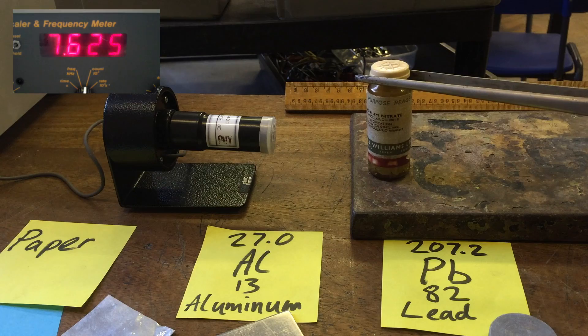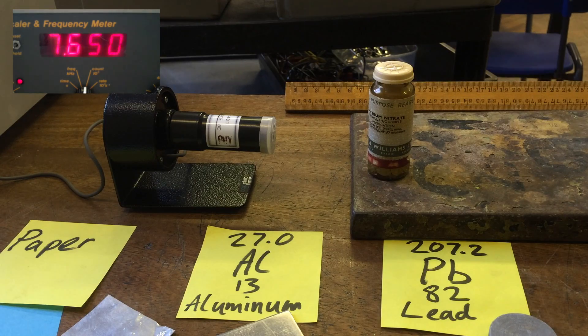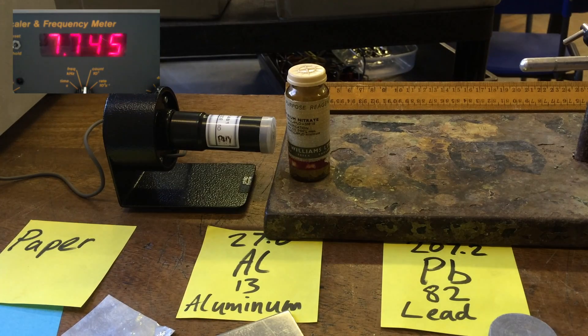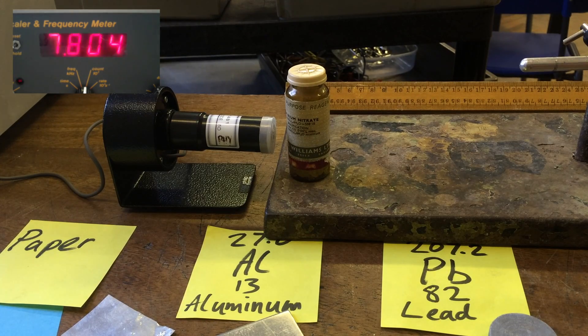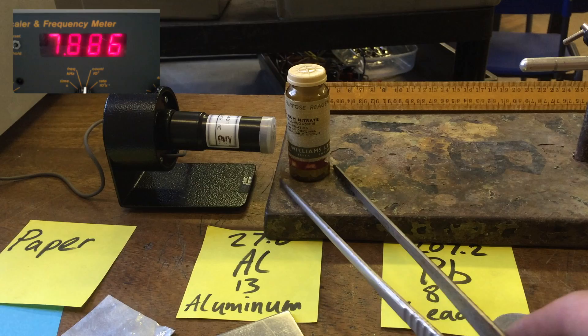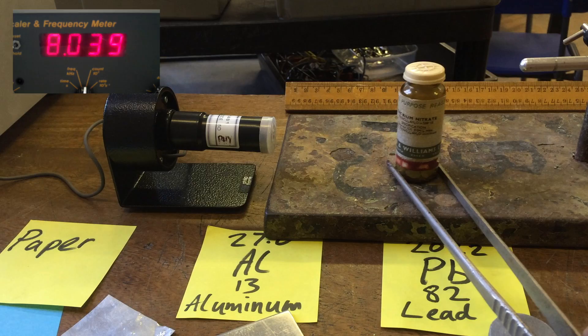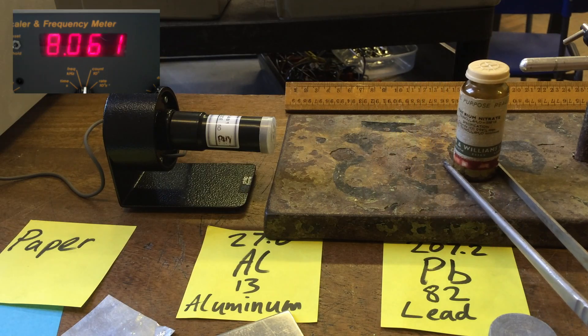If we pop that just in front of our Geiger-Muller tube and move it nice and close, as you can see, it's detecting loads and loads of gamma rays coming out there. If we move it further away, it's starting to drop off, but it's still not going down to zero. It's still producing quite a lot of gamma rays there.